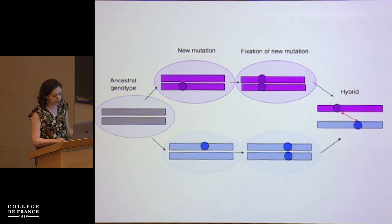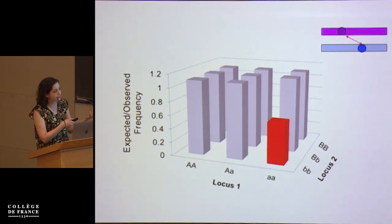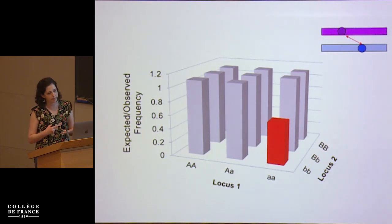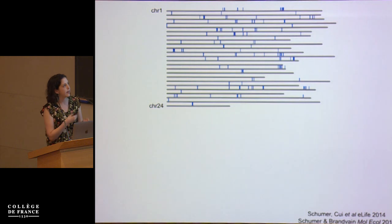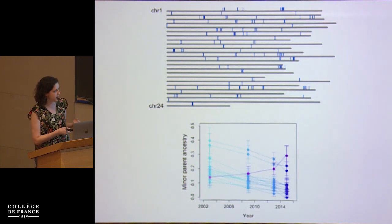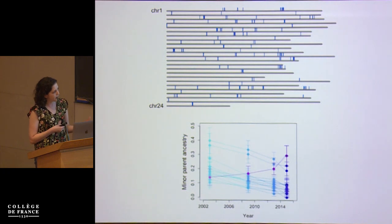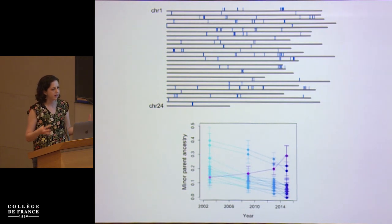We've done a wide variety of work on this. One early approach was to identify pairs of loci showing underrepresentation compared to what you'd expect given the ancestry frequency at those two loci in that population. Using this approach in each of our three hybrid populations, we could identify a fairly large number of candidate sites on the swordtail genome for these incompatible interactions. We now have a really nice time series dataset spanning about 20 to 30 generations in three independent populations where we can track these loci over time and see selection in action.